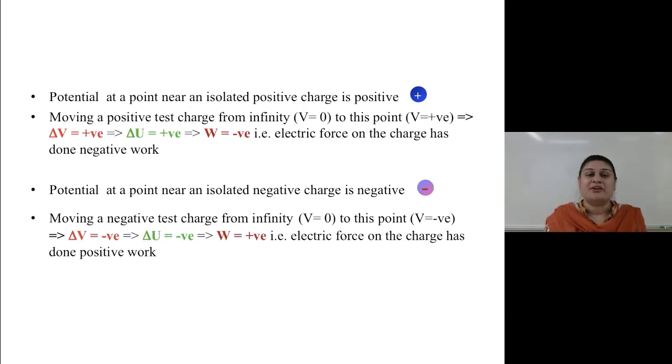A potential at a point near an isolated positive charge is positive. Moving a positive charge from infinity, where potential is zero, to this point, where potential is positive, gives us delta V is positive. So delta U, which is electrical potential energy, is also positive. That means the work will be negative.